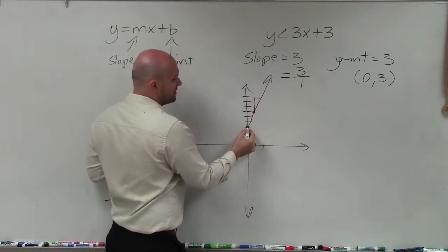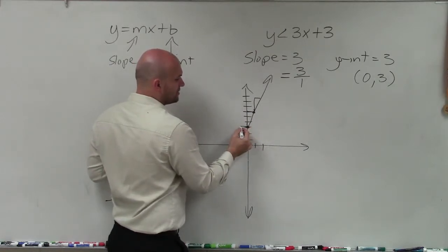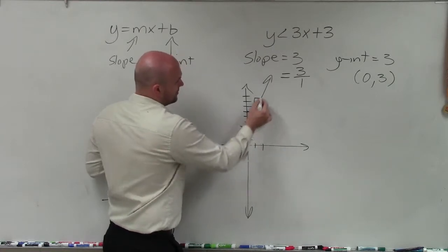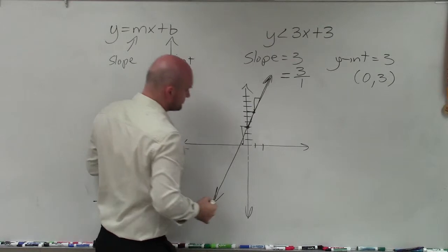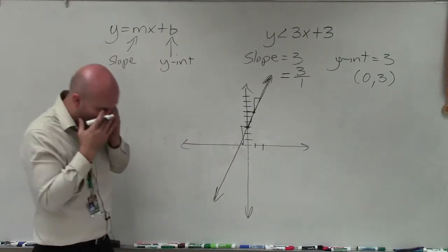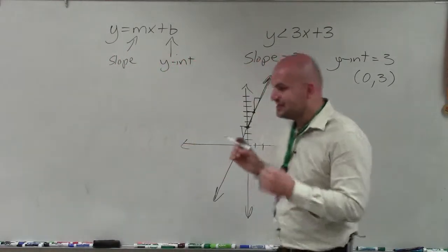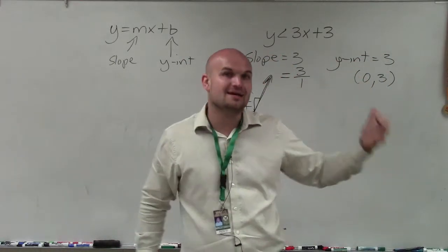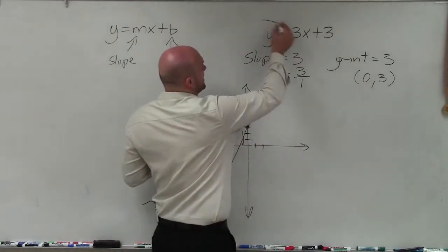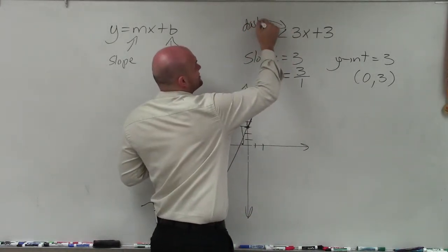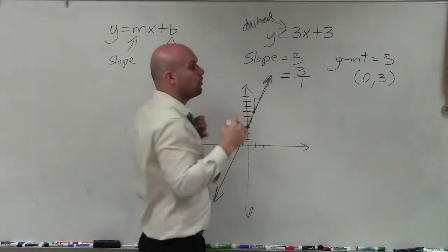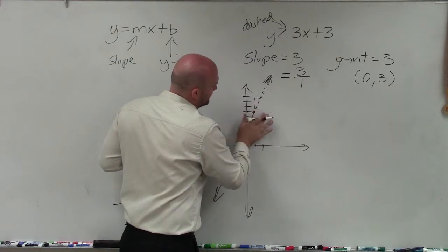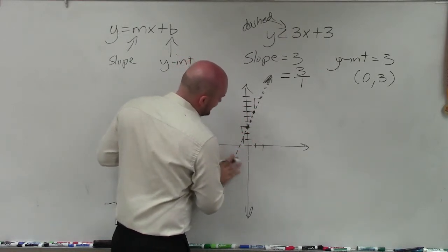You could also do this pattern in the negative — instead of going up 3 to the right 1, you could go left 1, down 3. Now, before graphing, the first thing you want to do is identify whether your boundary line is going to be dashed or solid. Since this is a less than inequality, it's going to be dashed. If it was less than or equal to, it would be solid. So that's why you don't want to get graph happy, because this is supposed to be represented by a dashed line.